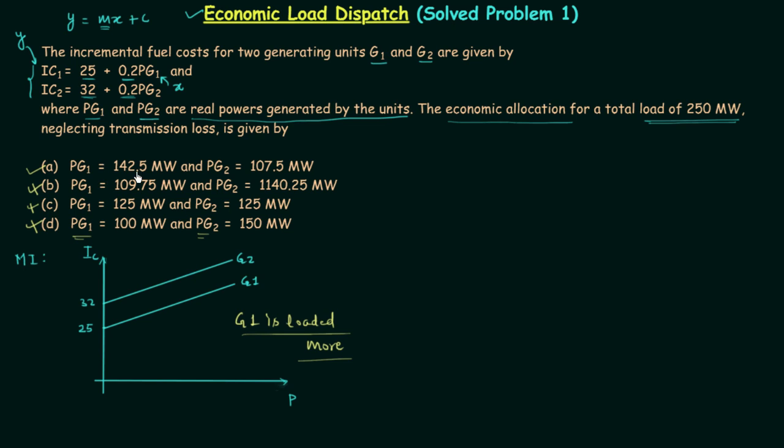And if you add 142.5 and 107.5, you will get 250 MW. So option A is correct. Option B was incorrect because of two reasons: first one being generator G1 is loaded less than generator G2, and also if you add 109.75 with 1140.25, then it is much larger than 250 MW. So in this way you can easily find out the correct option. And this particular method is good when you appear in any competitive exam. This will save you time.